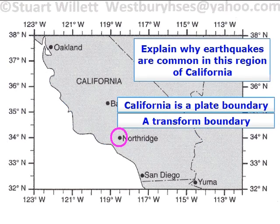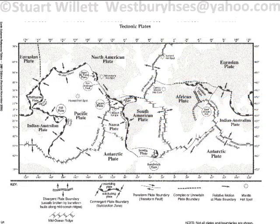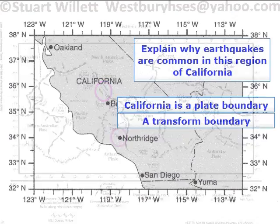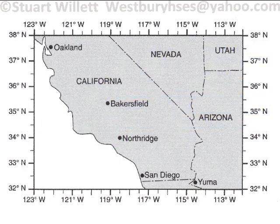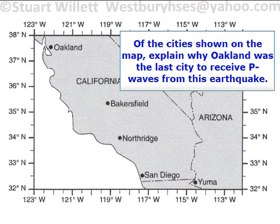It's on a plate boundary which is a transform fault, and along this boundary there is a fault zone — a transform fault. If you didn't know this, you could check your reference table. I'm pulling up the reference table page, and you can see the various plate boundaries. You can see that California is on a plate boundary with the Pacific Ocean.